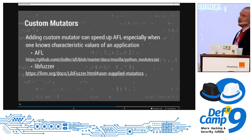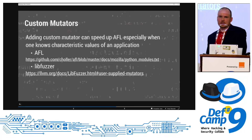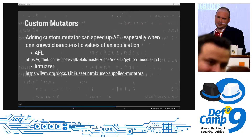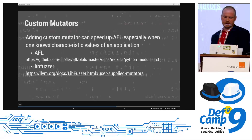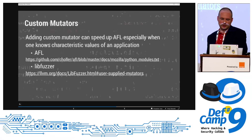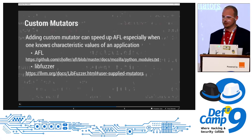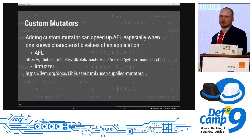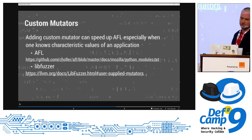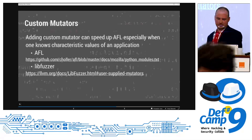You can also create your own mutators. This can help especially if you have your own application being tested, or your company is testing an application, and you know exactly what kind of application you have and what kind of magic values are used — so you can do it on your own. For AFL there is a nice article about how to do it. There is also a libfuzzer module that allows you to add custom mutators to libfuzzer if you are interested.